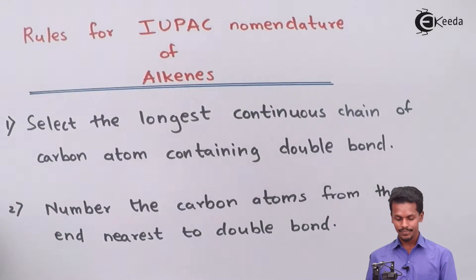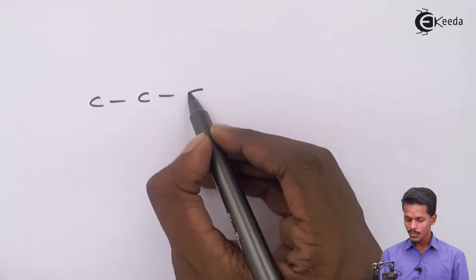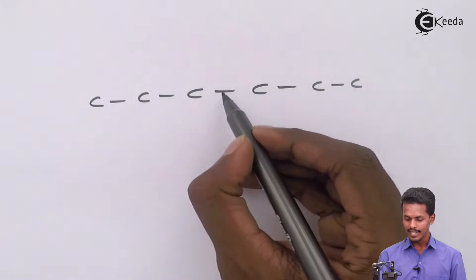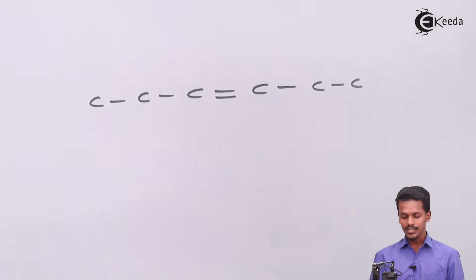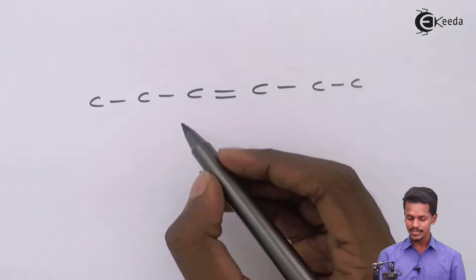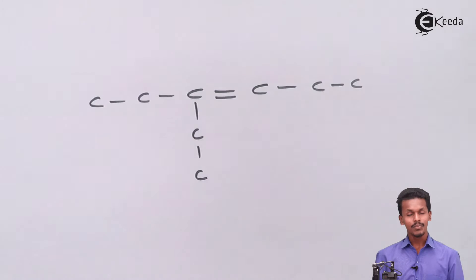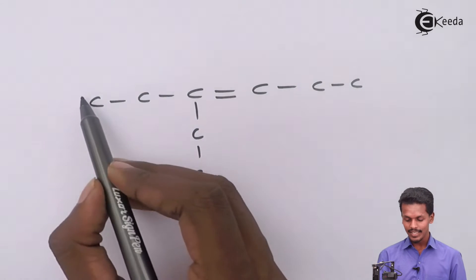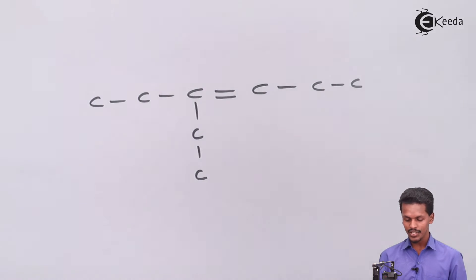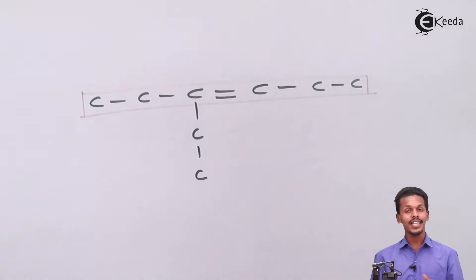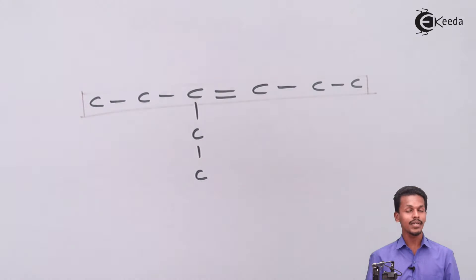Let me give you an example. I am drawing a skeleton of the carbon atoms without hydrogen atoms. Suppose this is the molecule in terms of an alkene and suppose I have added a double bond here. This is the longest chain we could consider. Suppose branching starts here — the longest chain would be this one. In both cases what we are considering is the chain should be the longest as well as it should contain at least one carbon-carbon double bond.